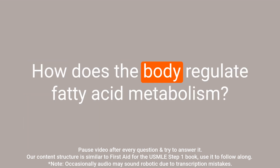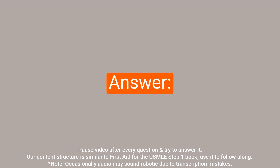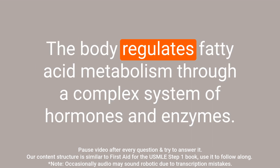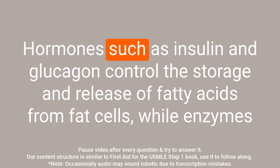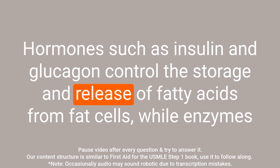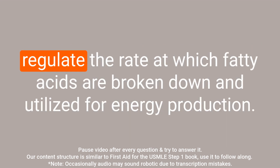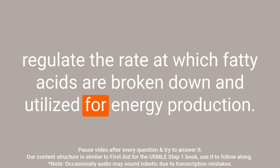Question: How does the body regulate fatty acid metabolism? Answer: The body regulates fatty acid metabolism through a complex system of hormones and enzymes. Hormones such as insulin and glucagon control the storage and release of fatty acids from fat cells, while enzymes regulate the rate at which fatty acids are broken down and utilized for energy production.